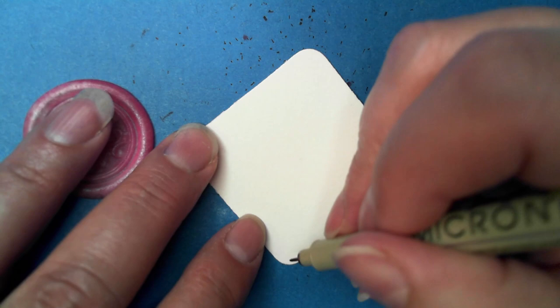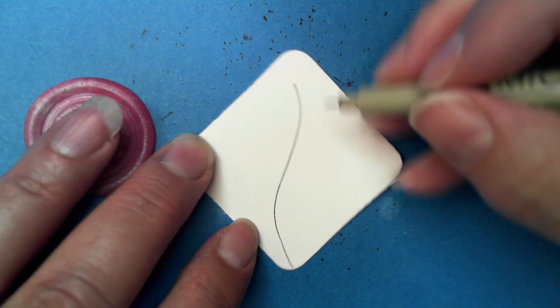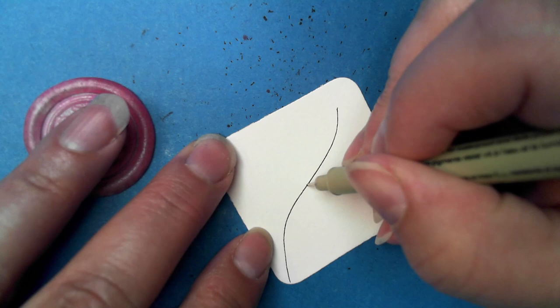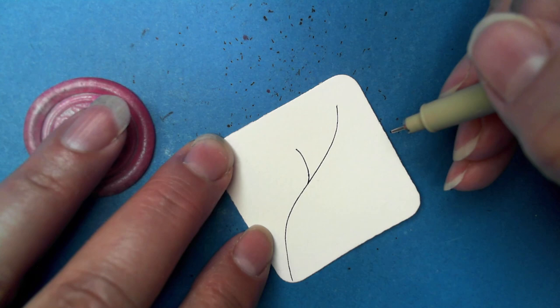This starts off with a curvy line like so, and then just coming off of it, you know, kind of wherever you want, but a little ways from the tip, just another curve line.